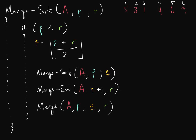Welcome to our ninth video on data structures and algorithms. We're talking about the merge sort algorithm. Our merge sort function takes a few arguments: array A, a starting index, and an ending index. We're going to sort the entire array, though this allows you to sort just a section of an array if desired.